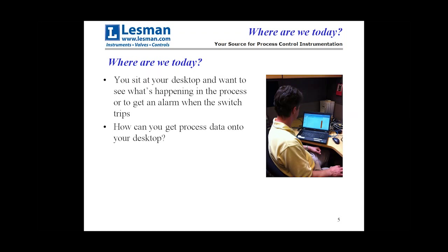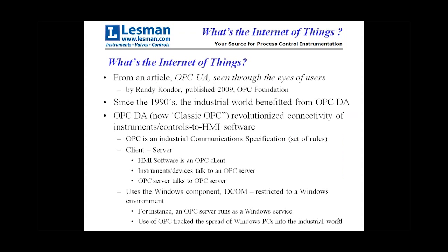So you sit at your desktop and you want to see what's happening — get an alarm when the switch trips, take a look at a trend. And the question is: how do you get the process data on your desktop?